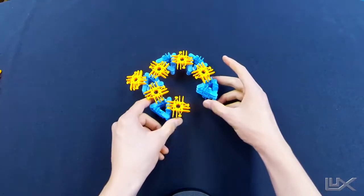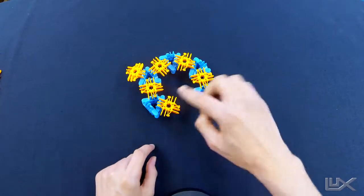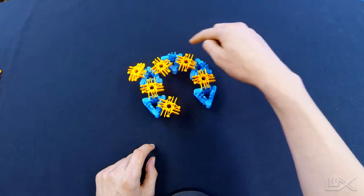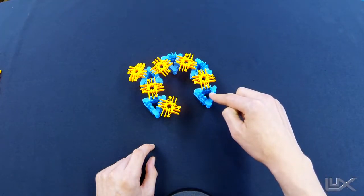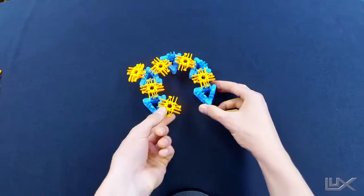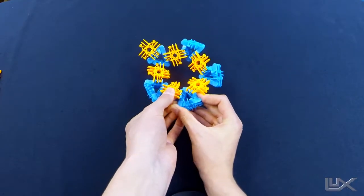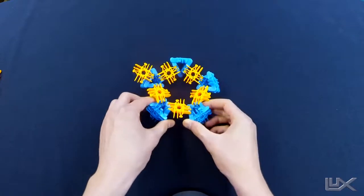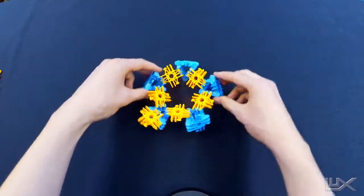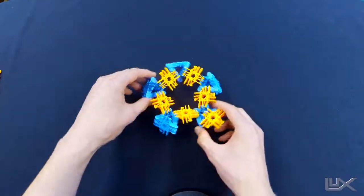Now the next step is we're going to take, and this is actually one, two, three, four, five, five prisms. We're going to take these and we're going to connect them together like that. So now we've got one kind of chunk of our dodecahedron.